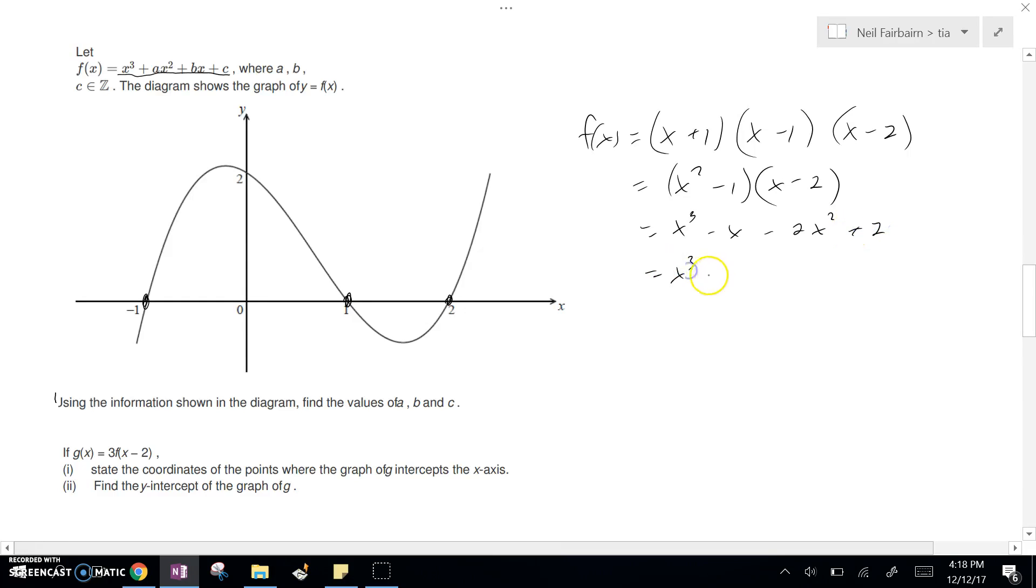Which is equal to x cubed minus two x squared minus x plus two. So we put it in the form that we wanted, like this. And we now know that a is equal to negative two, b is equal to negative one, and c is equal to two.